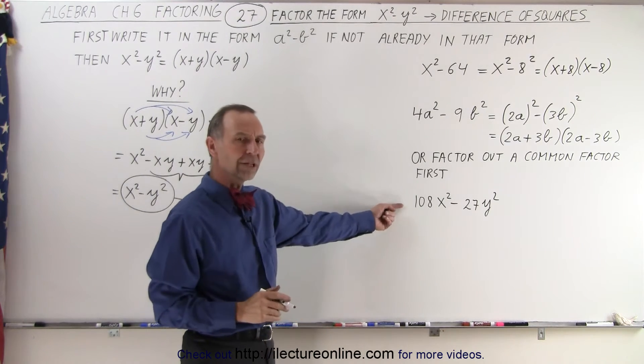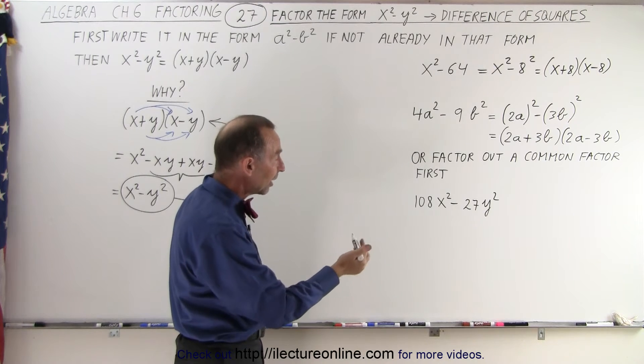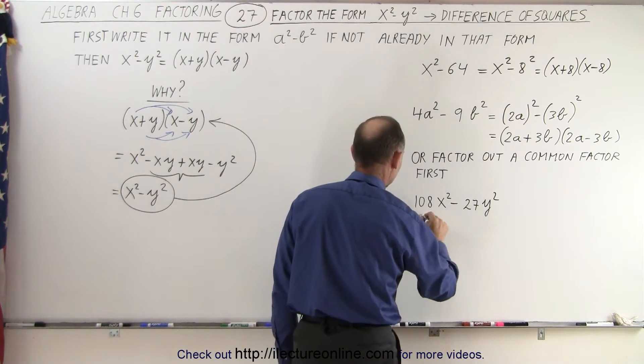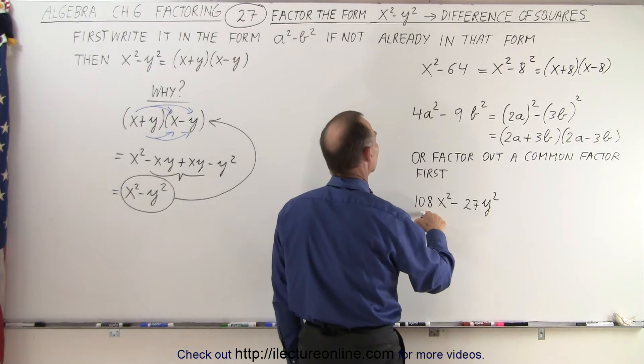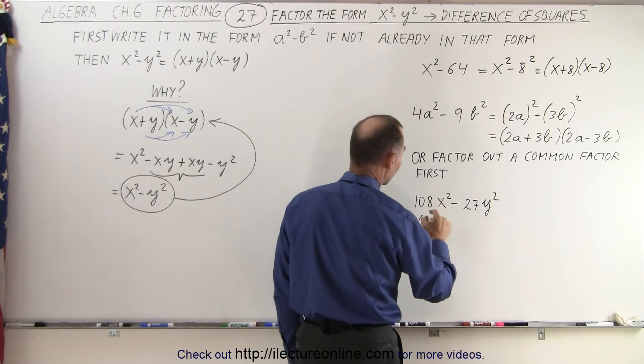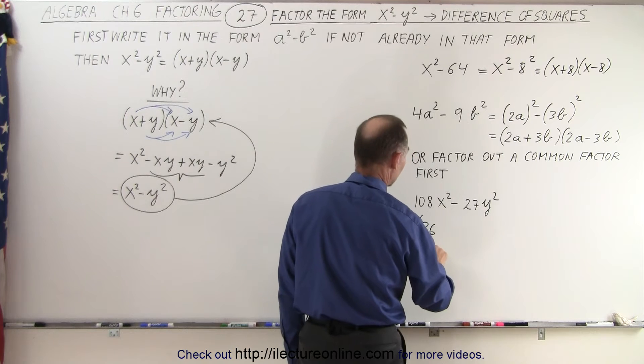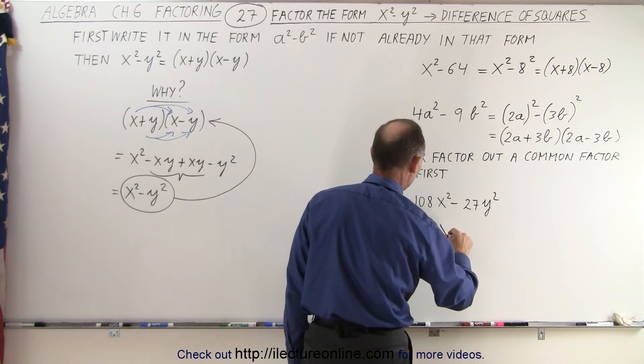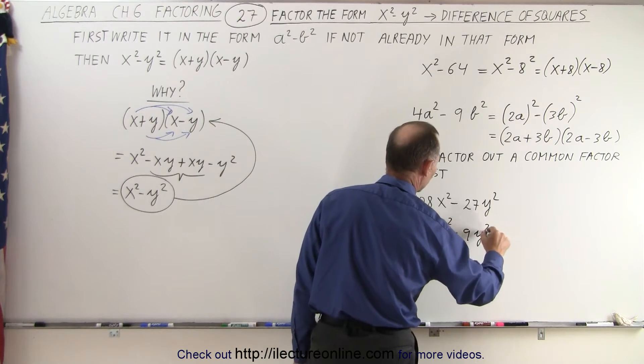And now sometimes you need to factor out a common factor. For example, in this case, when you factor out a 3, you get the following. This is equal to 3 times, well, let's see here, 3 times 36, 3 times 3 is 30 is 90, 3 times 6 is 18, that's correct. So 3 times 36x squared minus 9y squared.